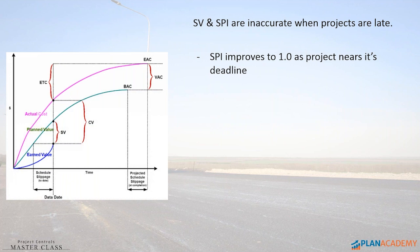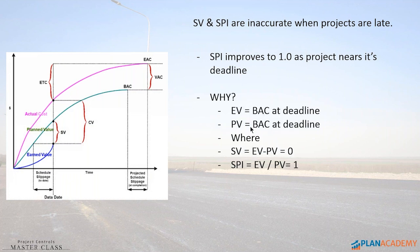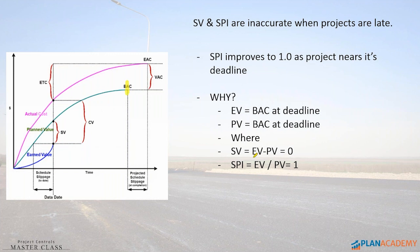Why does it do that? Let's look at the equations really quick. Your earned value line always ends at budget at completion. That's because the calculation for earned value is budget at completion times some percentage. So earned value goes from zero but always ends up at your budget at completion at the deadline. Planned value does the same thing — it also ends at budget at completion at the deadline. So at the deadline, your schedule variance equals earned value, which equals budget at completion, minus PV, which also equals budget at completion. So they equal the same thing, and your schedule variance is zero.